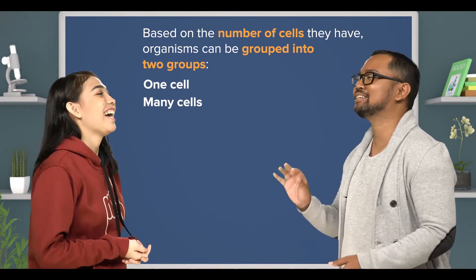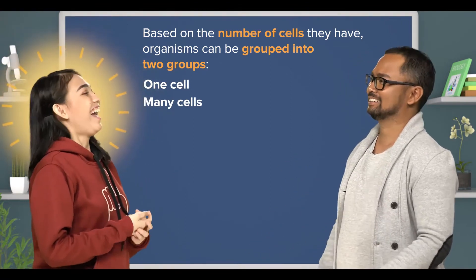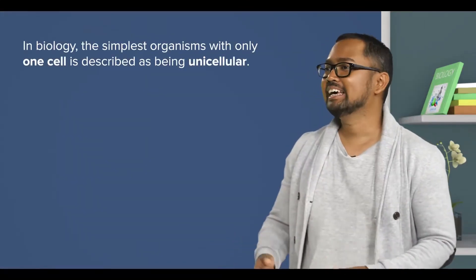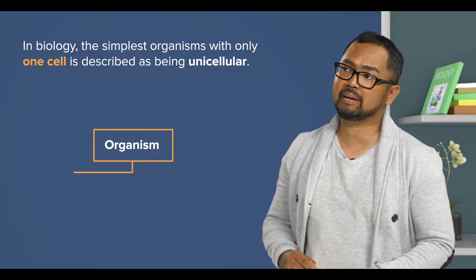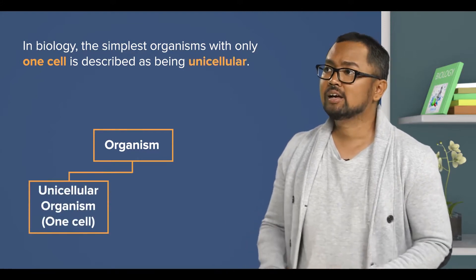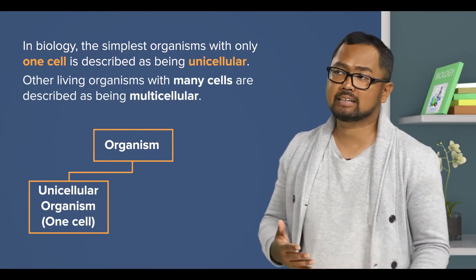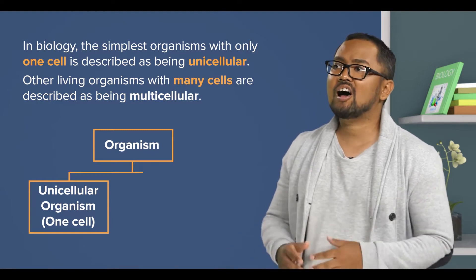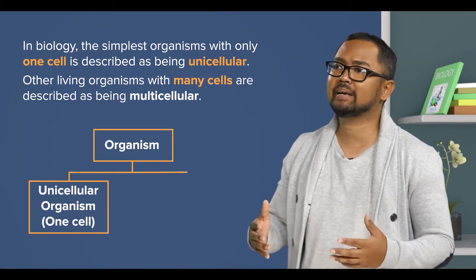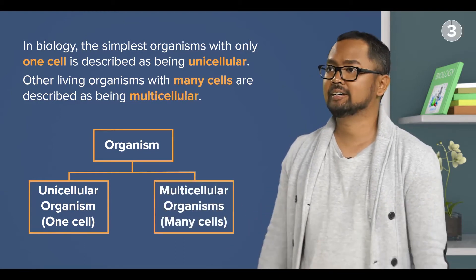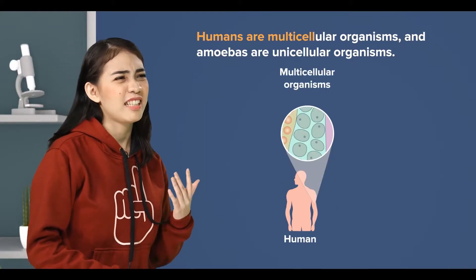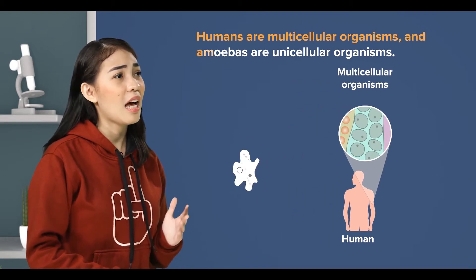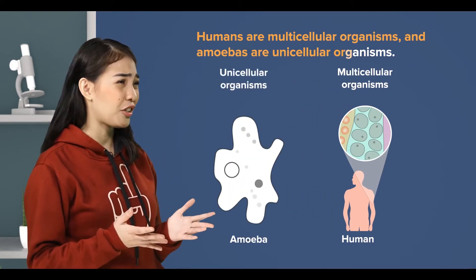Surprisingly, that's almost correct. In biology, the simplest organisms with only one cell are described as being unicellular. Meanwhile, other living organisms with many cells are described as being multicellular. So we humans are multicellular organisms, and amoebas are unicellular organisms.